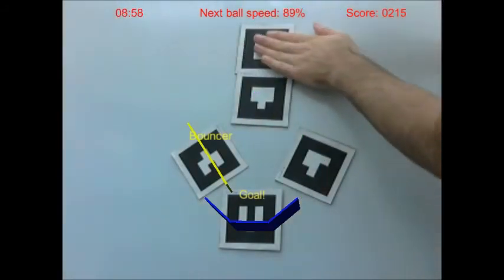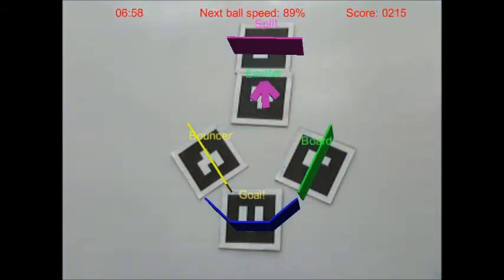We are on round 3. We add a splitter. The splitter is splitting the ball into 2 balls, and now we are reaching the goal and we have 2 times 100 points.